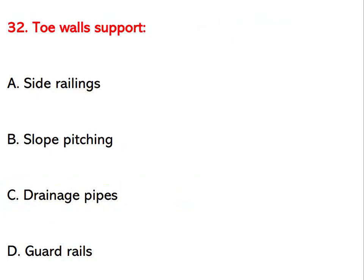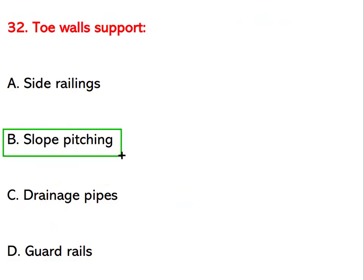Toe wall supports which structural element? Options are side railing, slope pitching, drainage pipes, or guardrails. The right answer is slope pitching.